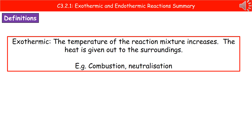Welcome to our review on exothermic and endothermic reactions. The first thing we're going to do is have a look at an exothermic reaction. When we're talking about an exothermic reaction, this is one where the temperature of our reaction mixture is going to increase. As a result of that, heat is being given out to the surroundings. Two key examples of that would be combustion and neutralization.